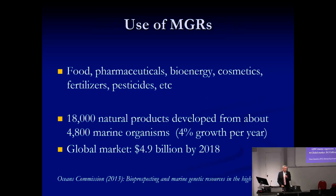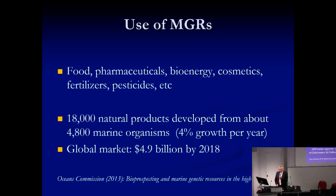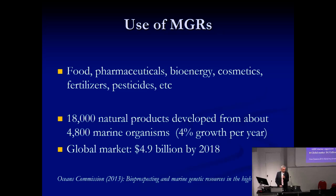Marine genetic resources can be and have been used in practice to develop new modalities of food, pharmaceuticals, bioenergy, cosmetics, fertilizers, and pesticides. One report indicates that 18,000 natural products were developed from about 4,800 marine organisms, with significant growth estimated at 4% a year. The global market was estimated at about 5 billion US dollars. Marine genetic resources allow the development of new products and new treatments, and are important from an economic point of view.